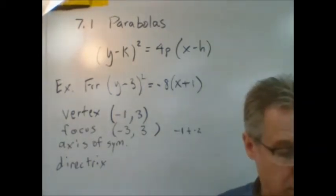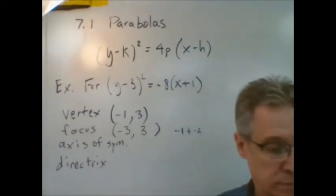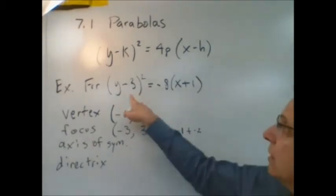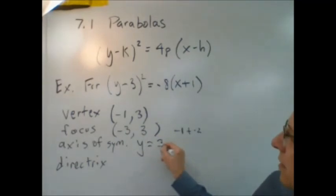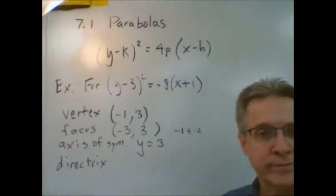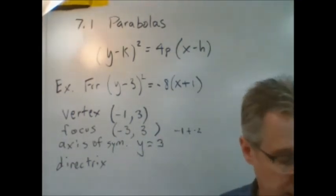The axis of symmetry, y equals k. That's what it says on the equation sheet. y equals k. k is 3. And so we got that one quite easily.